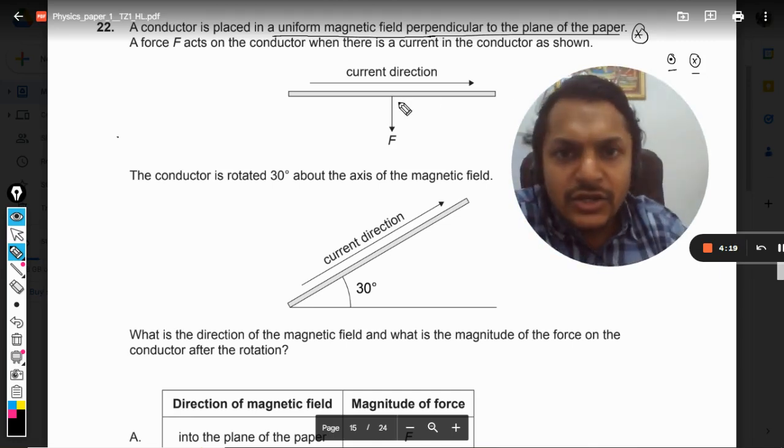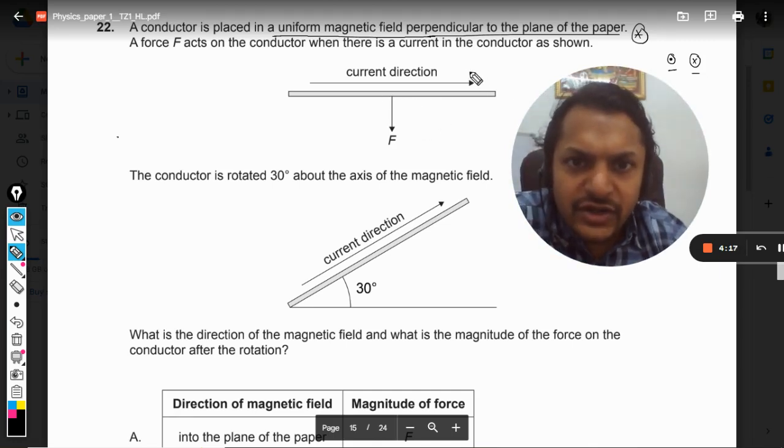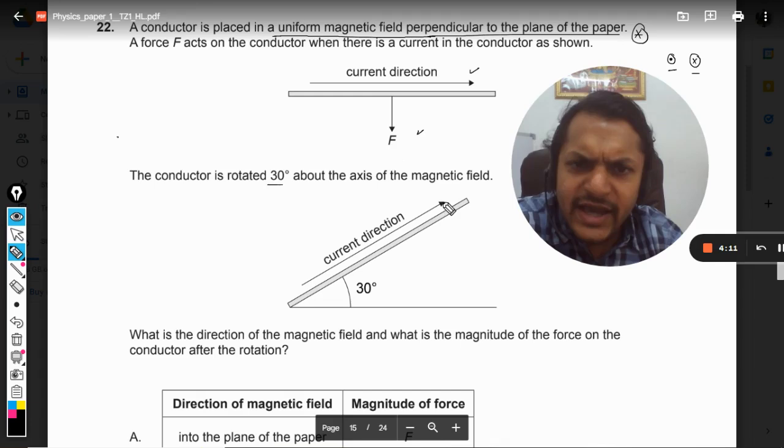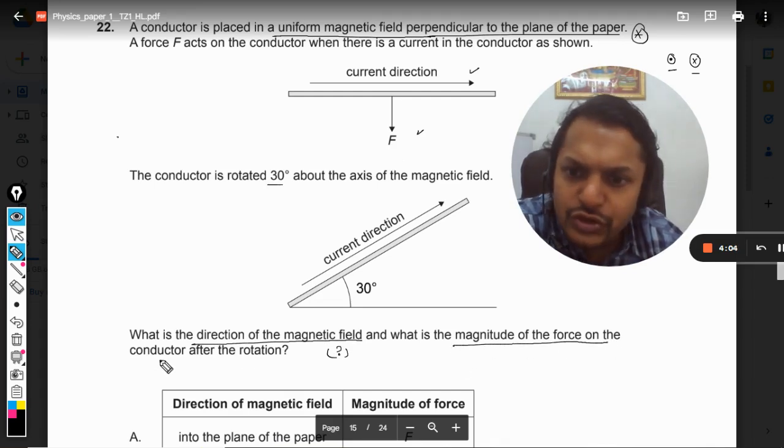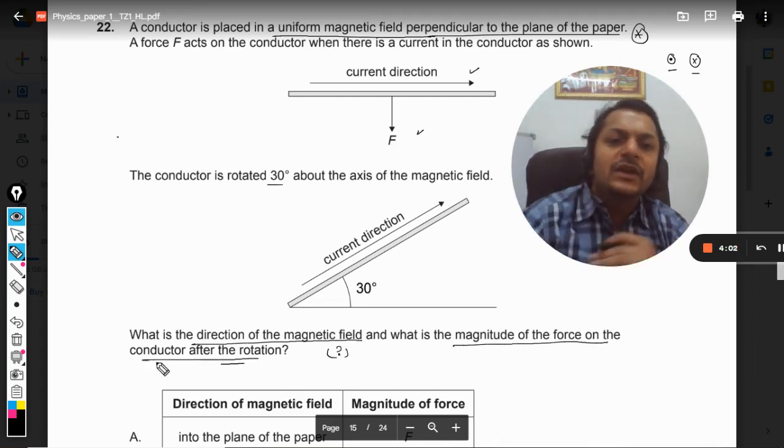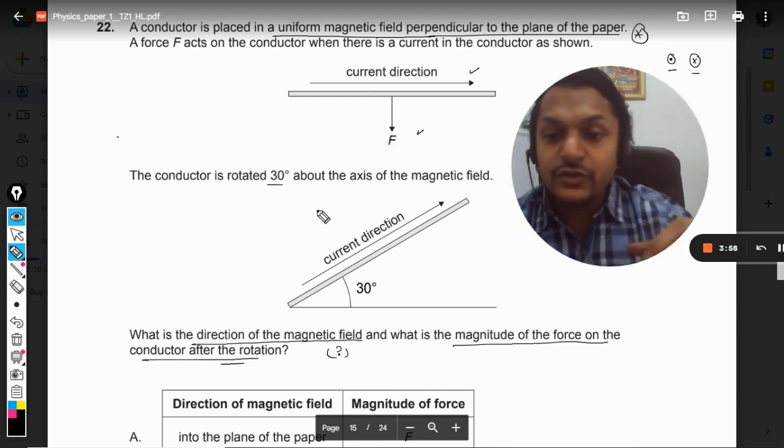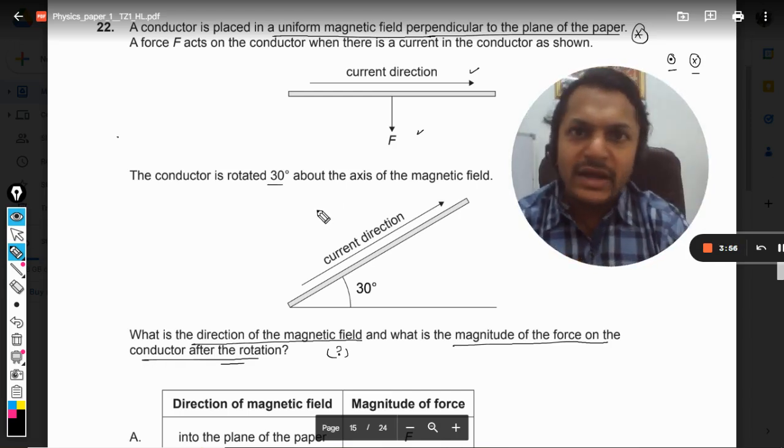Now the direction of the current is given and the direction of the force is also given. The conductor is rotated 30 degrees about the axis of the magnetic field. What is the direction of magnetic field first of all, and what is the magnitude of force on the conductor after rotation? So we have to find two different things.